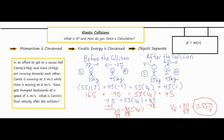To recap: after reading the question carefully, draw a good picture with a before-the-collision section and an after-the-collision section so you don't mix up your numbers. Draw your figures with the appropriate masses next to them, and draw arrows for velocities based on the problem description. Anything going in the opposite direction — in this case, to the left — gets a negative sign. Then drop in your numbers, use M times V multiple times to get each person's momentum before and after, and finish with a little algebra to get your unknown value.